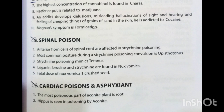Reefer or pot is related to marijuana. The highest concentration of cannabinol is found in charas. An addict develops delusions, hallucinations of sight and hearing, and a feeling of creeping things or grains of sand in the skin — he is addicted to cocaine. Magnus symptom is formication. Spinal poisons: anterior horn cells of the spinal cord are affected in strychnine poisoning. Most common posture during strychnine poisoning convulsions is opisthotonus. Strychnine poisoning mimics tetanus. Loganin, brucine, and strychnine are found in Nux vomica. Fatal dose of Nux vomica is one crushed seed.